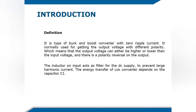A choke converter is a type of a buck-and-boost converter with zero ripple current. It is normally used for getting the output voltage with a different polarity, which means that the output voltage can either be higher or lower than the input voltage, and there is a polarity reversal on the output voltage.